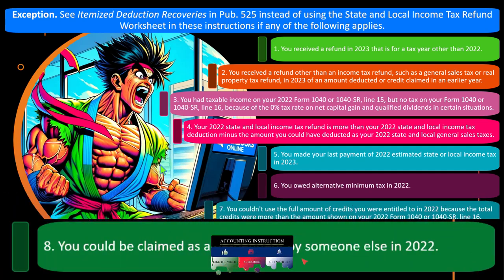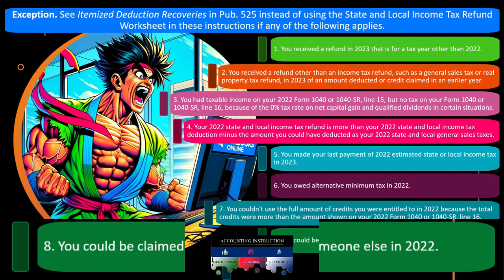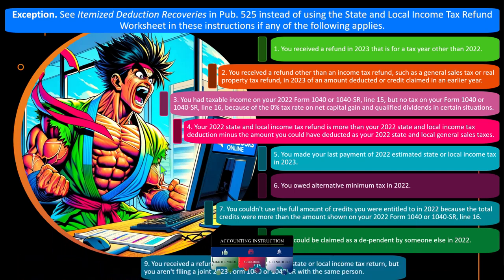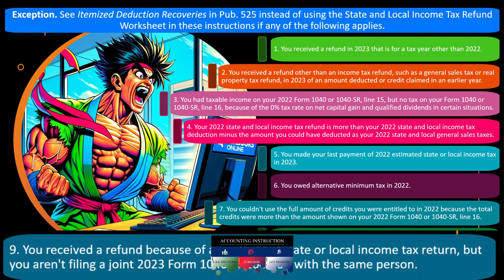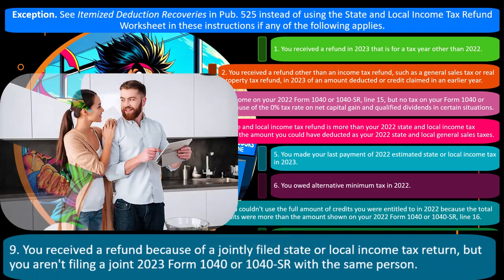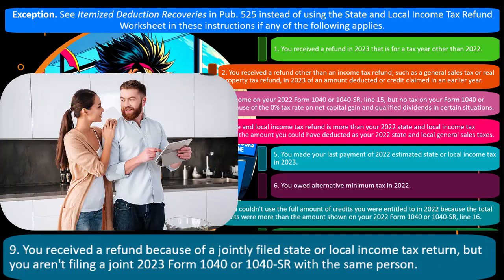Exception eight: you could be claimed as a dependent by someone else in 2022. Exception nine: you received a refund because of a jointly filed state or local income tax return, but you aren't filing a joint 2023 Form 1040 or 1040-SR with the same person — meaning your filing status changed, which complicates things.